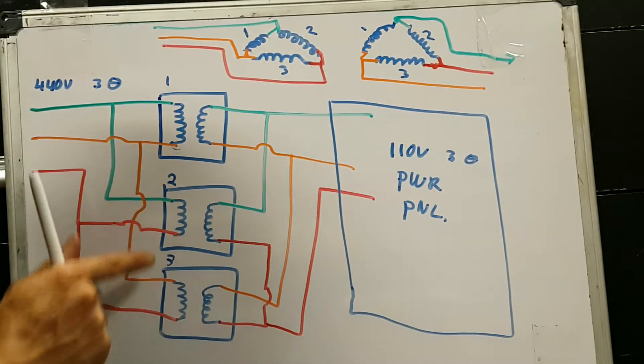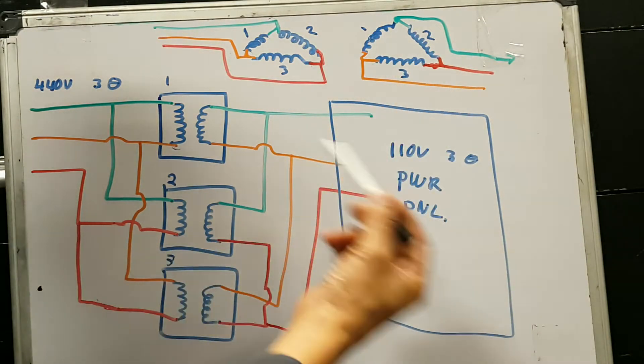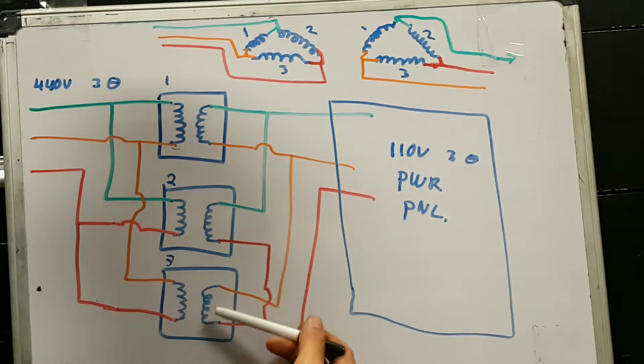These are my primary windings: this one, that one, and that one. And these are my secondary windings: this one, this one, and this one.